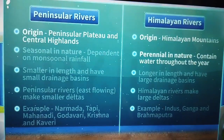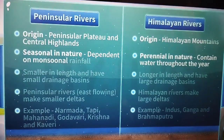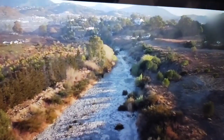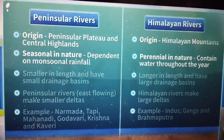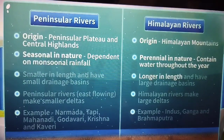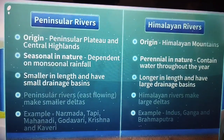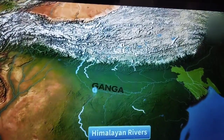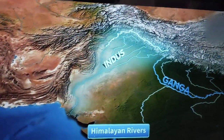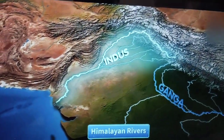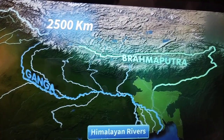On the other hand, the peninsular rivers are seasonal rivers, meaning they are dependent on the monsoonal rainfall. During the dry summer season, the flow of water in these rivers is very low. The Himalayan rivers are longer in length and have larger drainage basins as compared to their peninsular counterparts. For example, Himalayan rivers like the Ganga, Indus, and Brahmaputra run up to lengths of 2,500 kilometers.